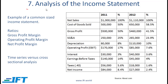Coming now to Section 7, which is Analysis of the Income Statement. Broadly speaking, there are two ways to analyze the income statement, and both these methods are actually related. One is to look at a common-sized income statement, the other is to look at ratios. With a common-sized income statement, every item on the income statement is taken as a percentage of sales or net sales. Here we are looking at every item as a percentage of net sales.